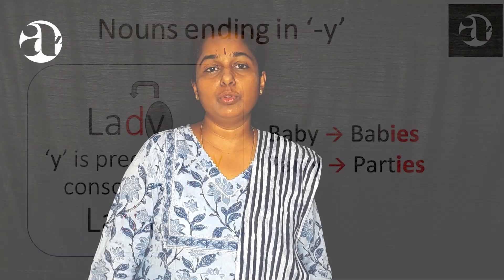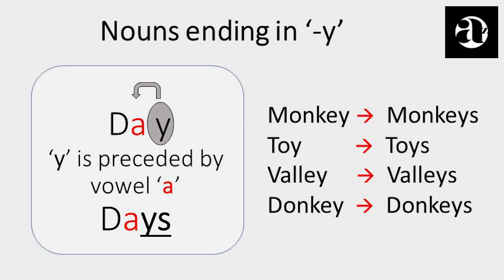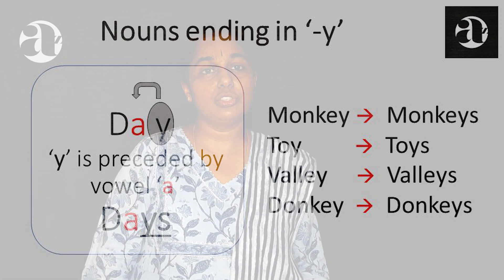But check the plural form of the noun 'day', where the last letter Y is preceded by a vowel A. Hence, we only add an S next to Y to form the plural. Day becomes days, monkey becomes monkeys, toy becomes toys, valley becomes valleys, donkey becomes donkeys. In all of these nouns, the last letter Y is preceded by a vowel. Therefore, we only add an S next to Y to form the plural.